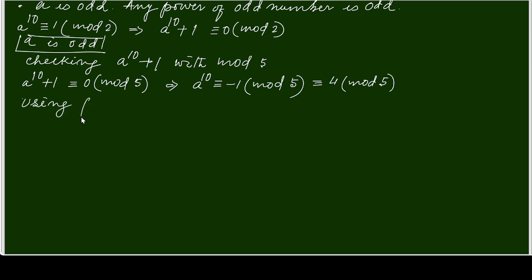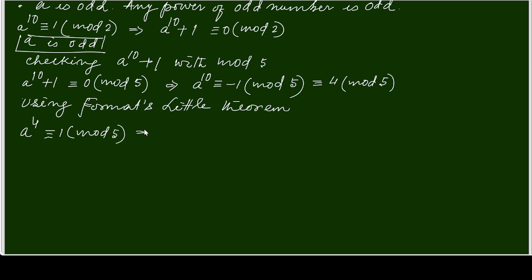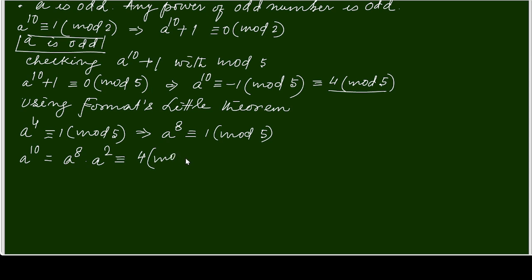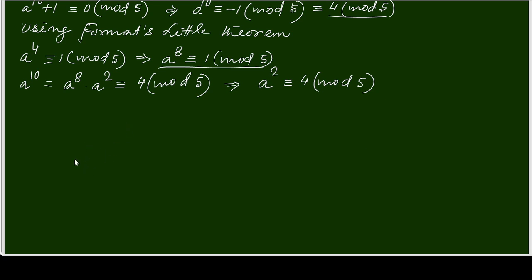Using Fermat's Little Theorem: a to the power 4 is congruent to 1 modulo 5, so a to the power 8 is also congruent to 1 modulo 5. We can write a to the power 10 as a to the power 8 times a squared. Since a to the power 10 equals 4 modulo 5 and a to the power 8 equals 1 modulo 5, this implies that a squared is congruent to 4 modulo 5.